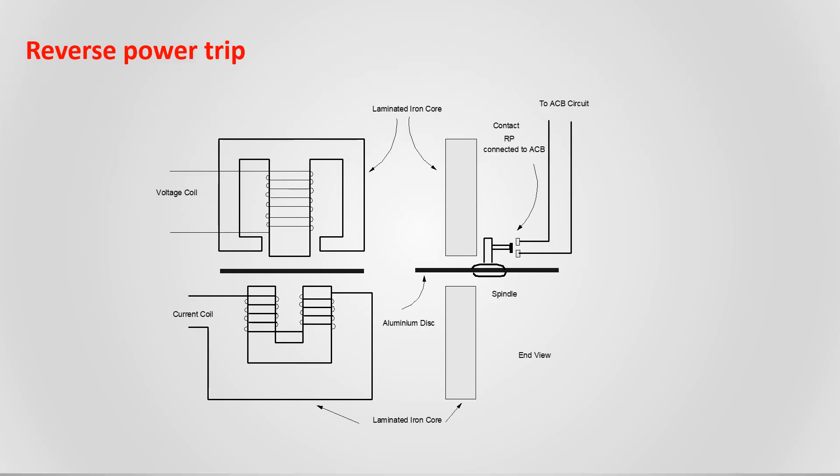Reverse power trip: We will do the testing of reverse power trip when two generators are running in parallel. Put the control of the testing generator in manual and also governor in manual mode. Adjust the governor in anti-clockwise direction, that is, lowering the load and shifting the load to another generator. At the set value of reverse power trip setting, it will open the breaker.